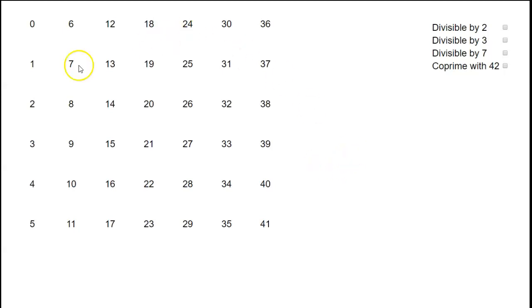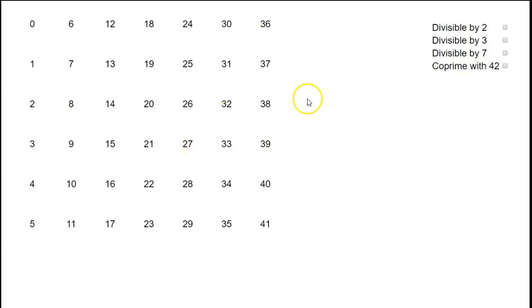So what we want to do is take these 42 numbers, remove the ones that are divisible by 2, remove the ones that are divisible by 3, and remove the ones that are divisible by 7, and see what's left. The inclusion-exclusion principle tells us how to count the number of those.